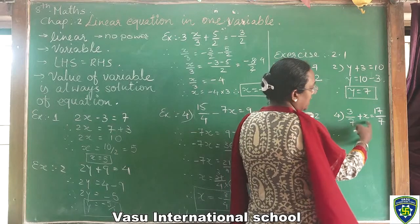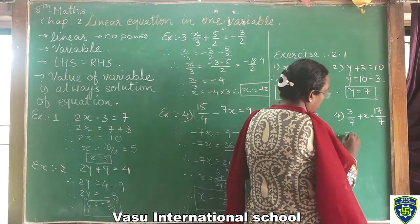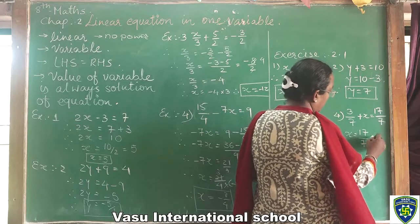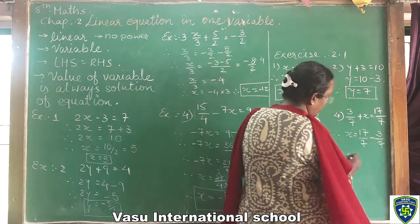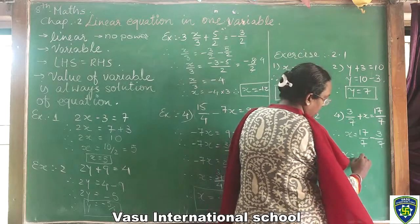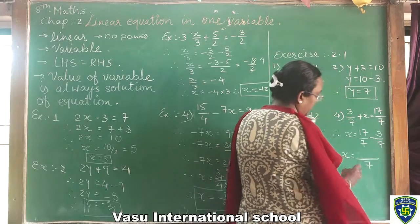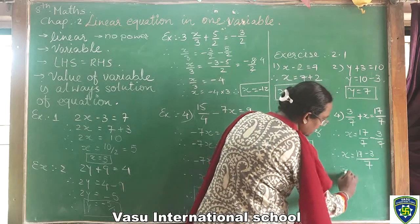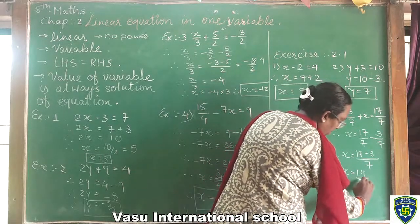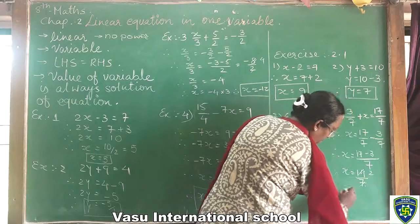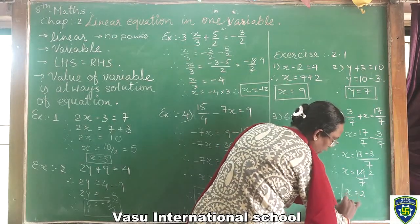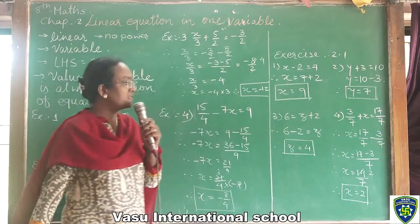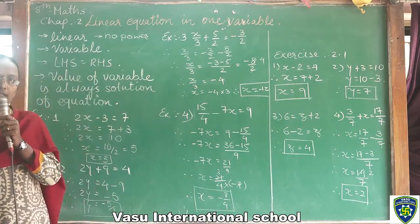The last sum: 3 upon 7 plus x equal to 17 upon 7. So x equal to 17 upon 7 minus 3 upon 7. Denominator is equal, so 17 minus 3 equal to 14, giving x equal to 14 upon 7, which simplifies to x equal to 2. These are the examples as well as sums. The next sums you will get in homework. Thank you.